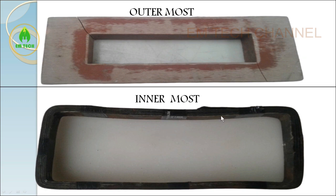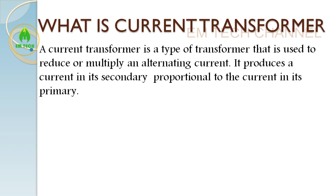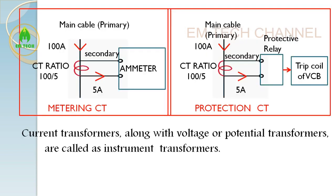Before that, let us discuss what a current transformer is and what the types are. A current transformer is a type of transformer used to reduce or multiply an alternating current. It produces a current in its secondary proportional to the current in its primary. It is used to step down the current flowing in the primary to the secondary for the purpose of metering and protection. For example, if a CT has a ratio of 100/5, and 100 amps is flowing in the primary, the secondary will produce 5 amps.